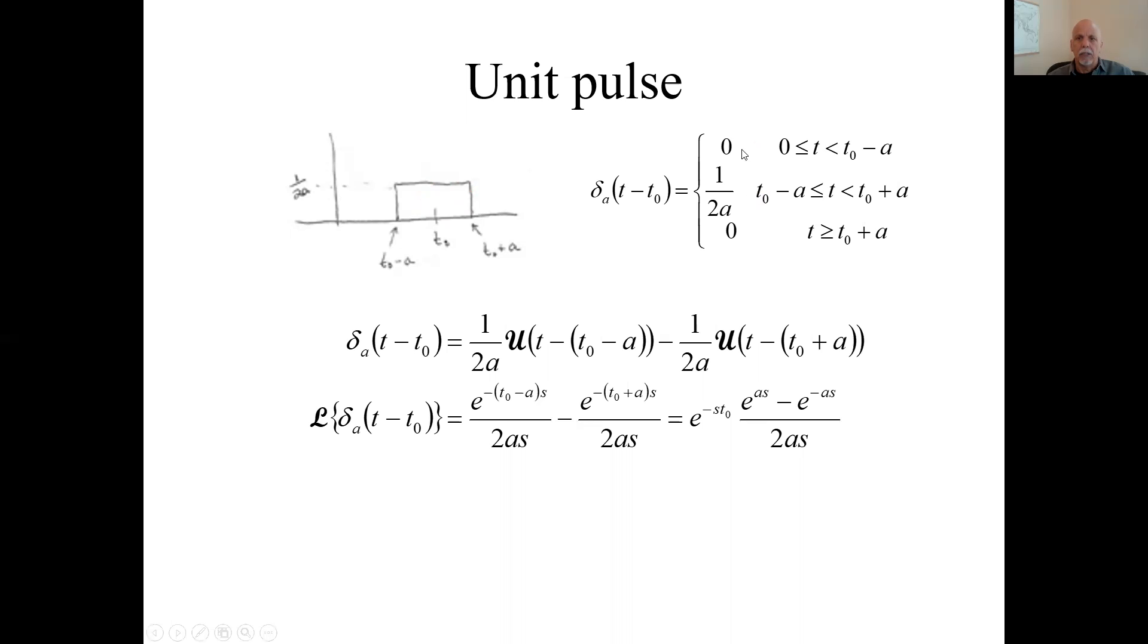Here's how it's defined. It's zero to the left of T minus A, zero to the right T plus A, and one over 2A between those limits. We can take the Laplace transform fairly easily. Well, first we have to express it using unit step. Remember, it has a start time and a stop time. So it's one over 2A times the unit step for the start time minus the unit step for the stop time.